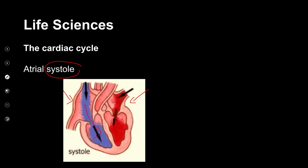You guys saw those awesome tendinous cords with their valves. When the atria squeeze open, the blood rushes into the ventricles. My tricuspid and my bicuspid valves must open — the blood rushes into the ventricles. As it finishes rushing, those valves must close.